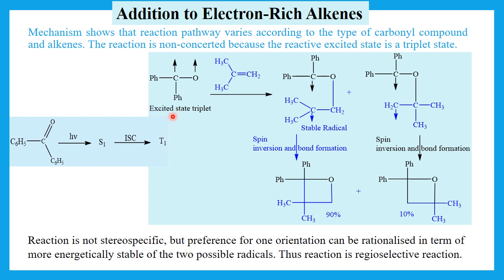Here is the ketone in its triplet state. The aromatic ketone, in the presence of light, is excited to the S1 state. Then, after intersystem crossing, it is converted into the triplet state. The biradical shows that the reaction will not be concerted.